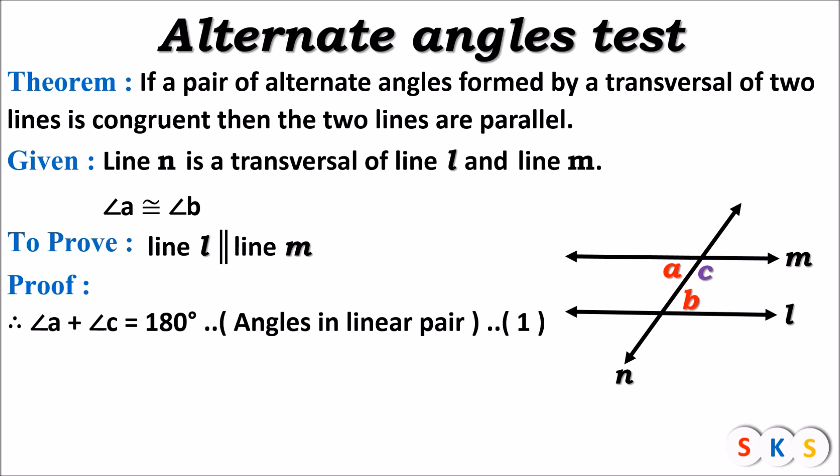You can see in this figure angle a and angle c — they form a linear pair, therefore the sum of these two angles is 180 degrees. Now, it is given that angle a is congruent to angle b — you can see in this figure angle a and angle b are congruent because alternate angles are congruent. That is equation number two.